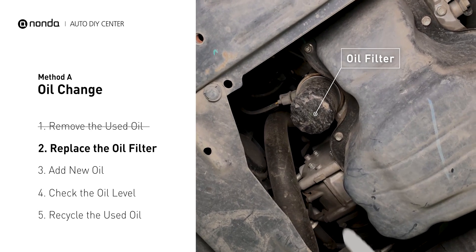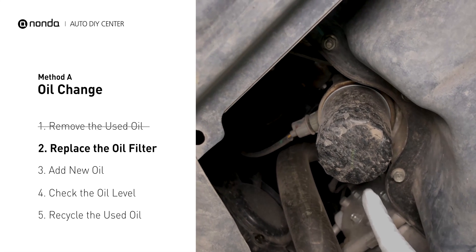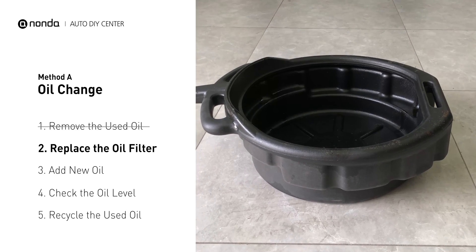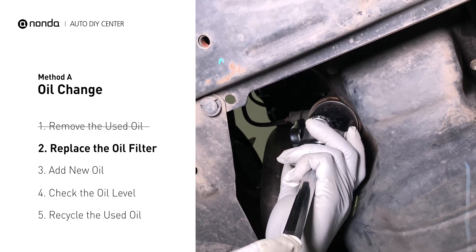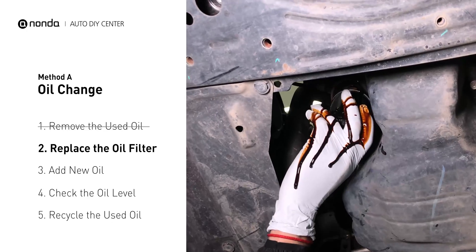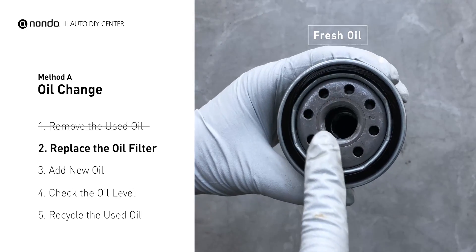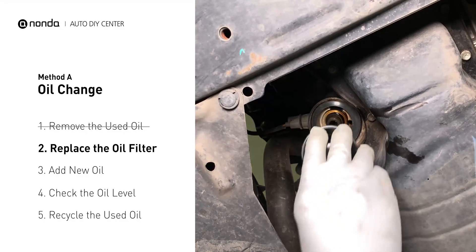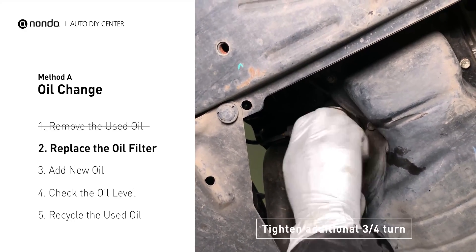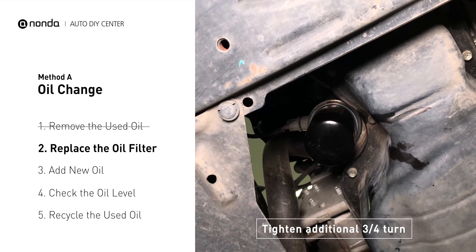The oil filter is usually located beside the oil pan or under the hood of your vehicle near the engine. Place the collection pan under the filter — there will be oil in the filter itself that could be hot, so it is important that the oil goes into the collection pan. Spread a bit of fresh oil evenly on the new filter's gasket, then install the new oil filter and tighten it an additional three-quarters of a turn. Be sure not to over-tighten.